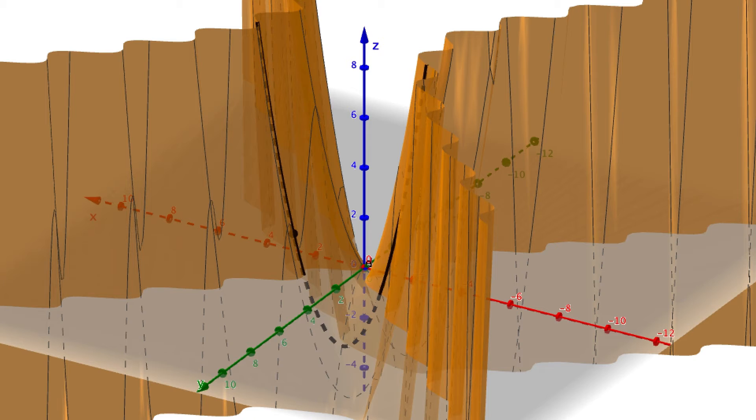If we try to find the second derivative with respect to x, then we would be looking at the concavity of this curve.